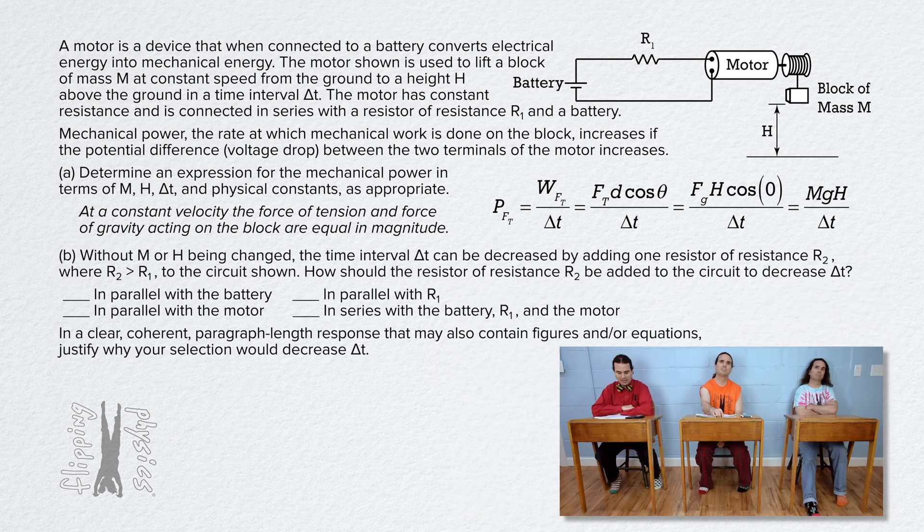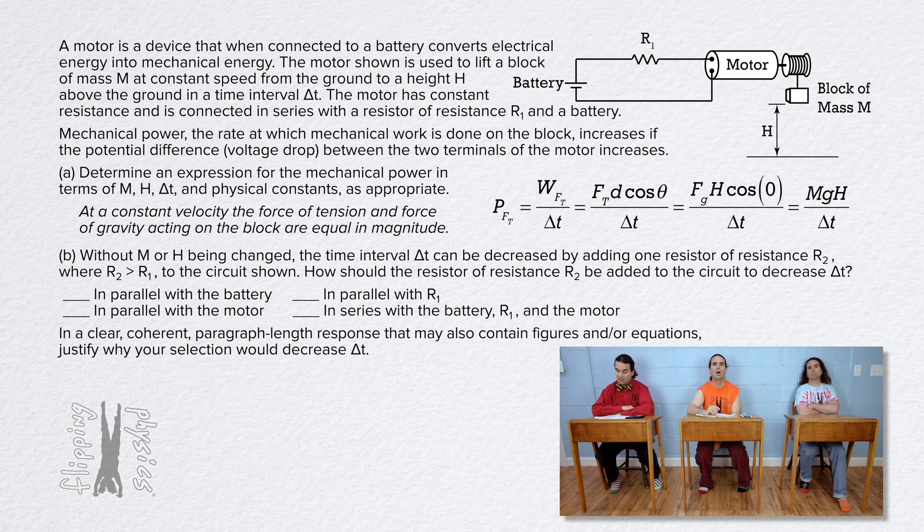Billy, please read part B. Part B: Without M or H being changed, the time interval delta t can be decreased by adding one resistor of resistance R2, where R2 is greater than R1, to the circuit shown. How should the resistor of resistance R2 be added to the circuit to decrease the time interval delta t? And there are several options: in parallel with the battery, in parallel with resistor 1, in parallel with the motor, and in series with the battery, resistor 1, and the motor. In a clear coherent paragraph length response that may also contain figures and/or equations, justify why your selection would decrease the time interval delta t.